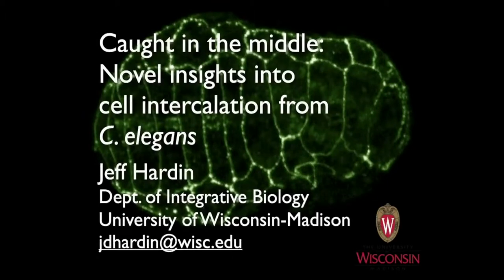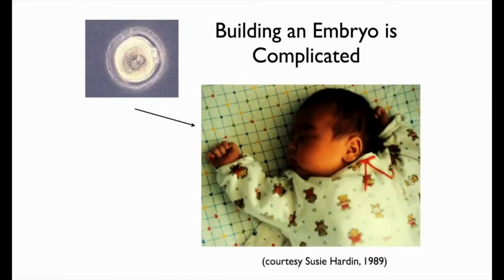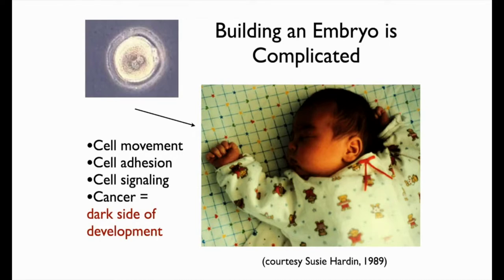The fundamental interest of my lab is morphogenesis — how do you build an embryo? We all started off as a one-celled zygote, and then some really complicated things happen. That embryonic construction project involves cell movement, cell adhesion changes, and changes in cell signaling. Many of the pathways that developmental biologists like me have been studying turn out to be misregulated in cancer, so the things we learn here have general relevance to human disease.